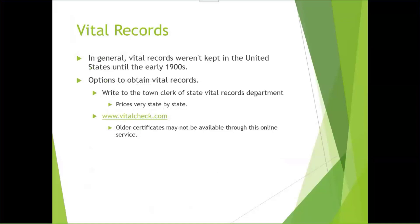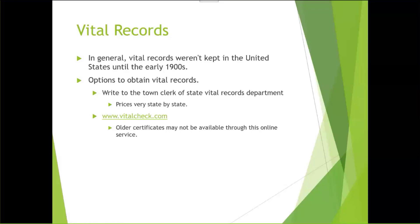You can write to the town clerk or the state vital records department. This is fee-based and the prices vary from state to state. VitalChek is a website where you can order vital records online. However, these are going to be more recent records — older certificates may not be available. So we're just going to check VitalChek.